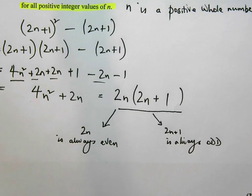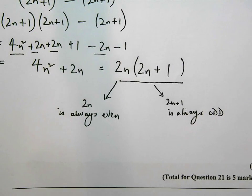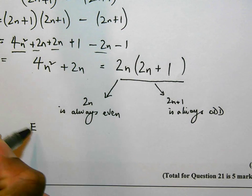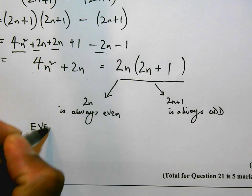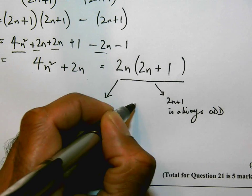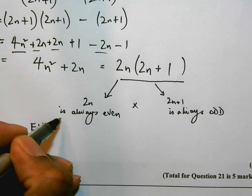And one of the things that you need to also know is that an even... So we have 2n. 2n+1. They're times-ing each other. So an even number times an odd number is always going to be an even number.